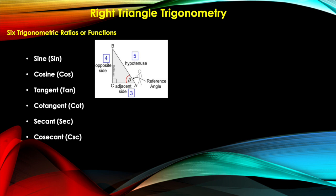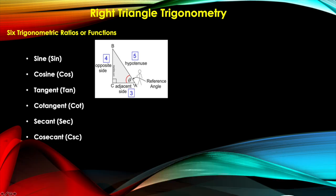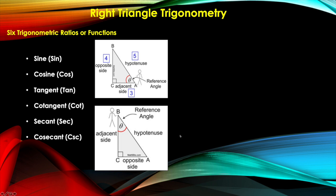The names of the two legs depend on the position of the reference angle, which is the fourth part of the right triangle trigonometry. In this diagram, the reference angle is at the base of the right triangle. The side opposite the reference angle is named the opposite side, and the side beside the reference angle is named the adjacent side.